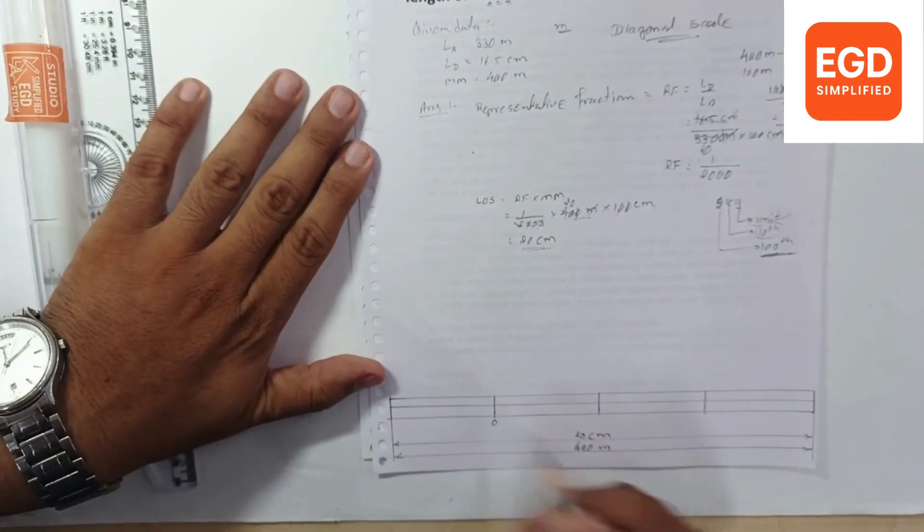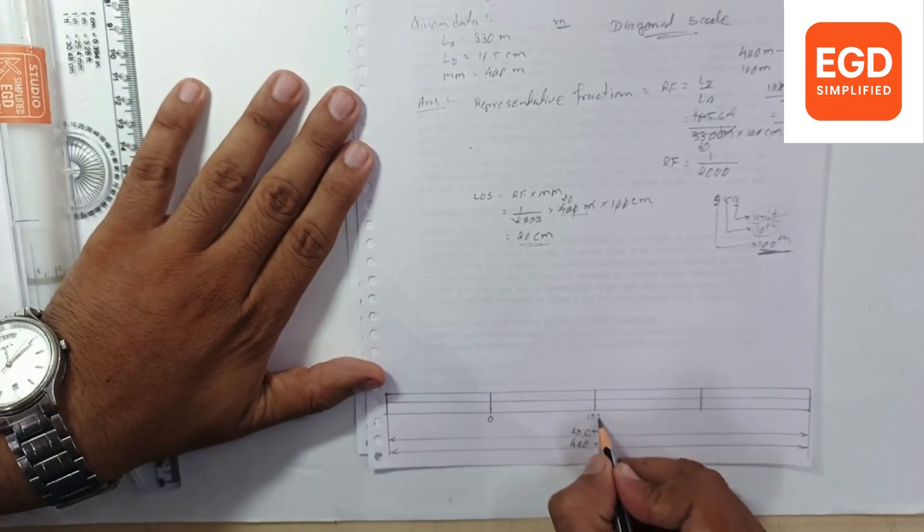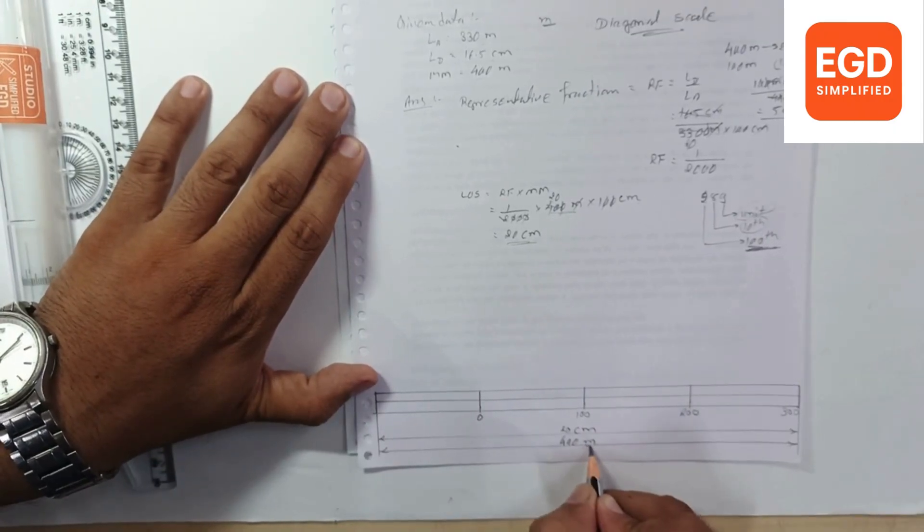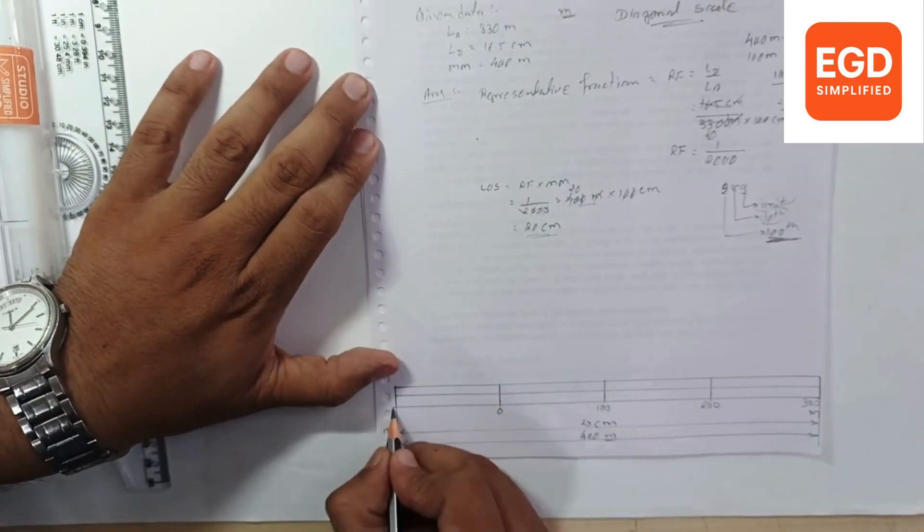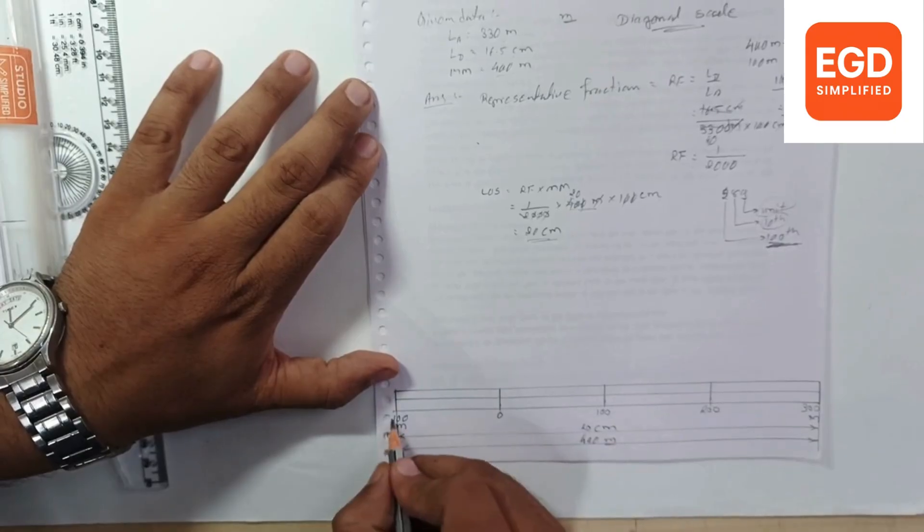Leave the first block. Then we have divided into 100th. So 0, 100, 200, 300. What is the major unit? Meter. Give here. Then this first block is also indicating 100 meters. There is no any subunit.